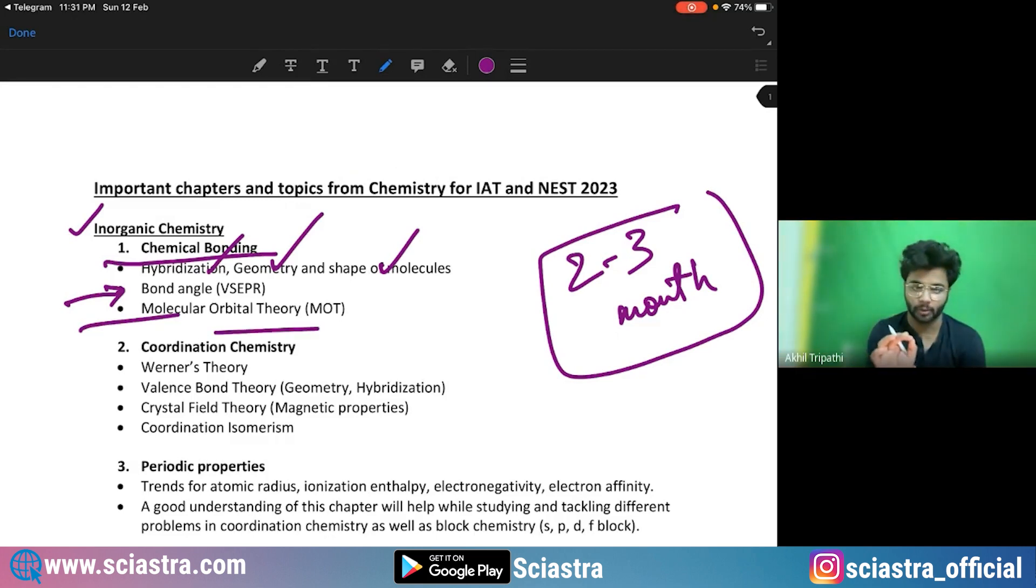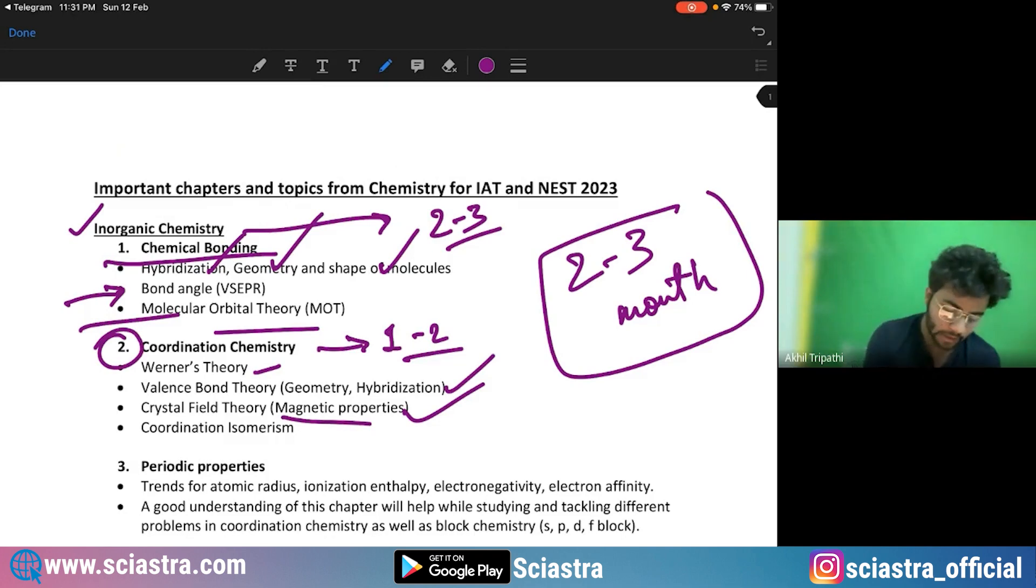These are the most important topics. Coming to coordination compounds, at least one and even two questions can come from here. Guaranteed, even two to three questions can come from here. Then what are the important topics in coordination compounds: Werner's theory, valence bond theory, hybridization and geometry of coordination complexes, then crystal field theory, especially the magnetic properties, whether it is going to be paramagnetic, diamagnetic and all, and then coordination isomerism.